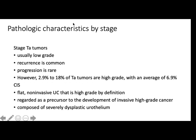Characteristics by stage: for TA, usually low-grade, recurrence is common, progression is rare — 2.9 to 18% of TA tumors are high-grade with an average of 6.9%. CIS is regarded as a precursor for development of invasive high-grade cancer. Management differs from high-grade and low-grade — it should always be treated as high-grade.